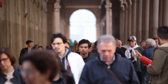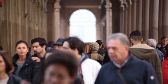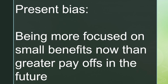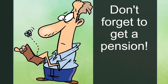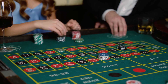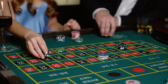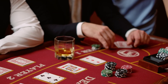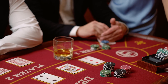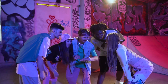Other forms of irrationality come from the biases we have and the fallacies we believe in. There's present bias, where people are more focused on small benefits now than greater payoffs in the future — people who are not paying into a pension fund, for example. The gambler's fallacy is the idea that something having happened or not happened in the past makes it more likely to happen or not happen in the future. This is the fallacy that keeps people at the gaming table, because their card has to come up soon — if it's been heads three times in a row, surely now it must be time for tails.